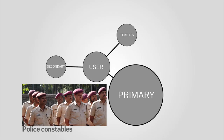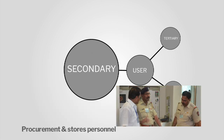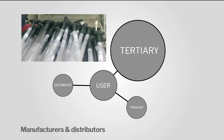In this case, the primary users were the police constables. The secondary users were the police commissioner and the people in the procurement and stores departments. The tertiary users were the manufacturers and distributors of the seat, who would have their own requirements like storage and dispensing.